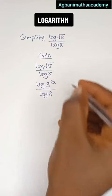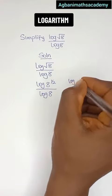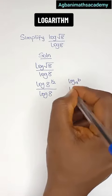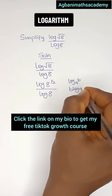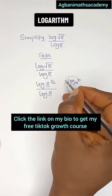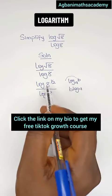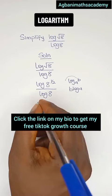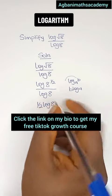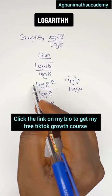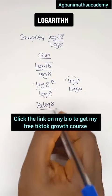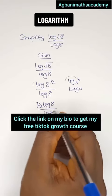In indices, if you have something like log a raised to power b, you can write this as b log a. So this power here can cross over the logarithm to become b. So instead of having raised to power half, we are going to have half log 8. This square root has moved across the logarithm and we now have half log 8 divided by log 8.